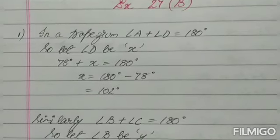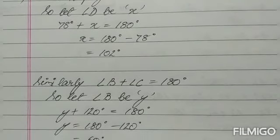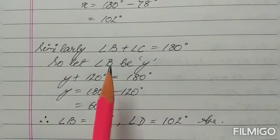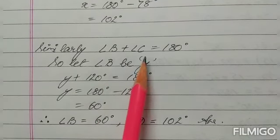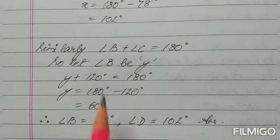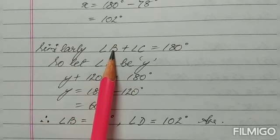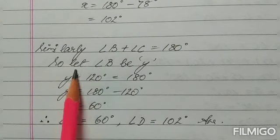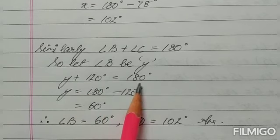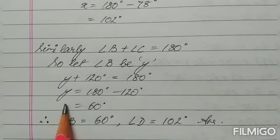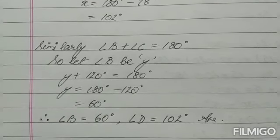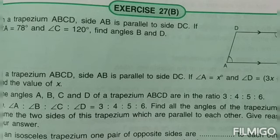Similarly, we will calculate angle B. Angle B and angle C together are 180 degrees. Let angle B be Y. So Y plus 120 equals 180, giving Y equals 60. So this is how you calculate angle B and angle D.